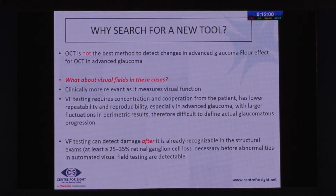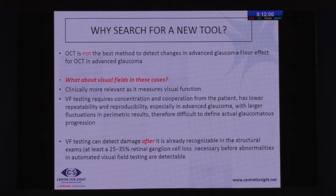So why search for a new tool? The problem is that OCT is not the best method to detect changes in advanced glaucoma. Because of the floor effect, in advanced glaucoma you have some neural elements remaining, but the retinal nerve fiber layer — in some machines between 50 to 70 percent — after a certain point you can't determine whether retinal nerve fiber layers are actually present.